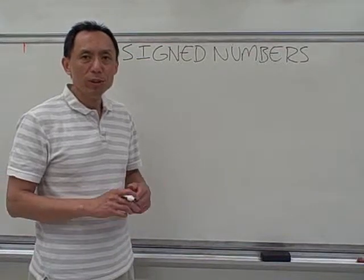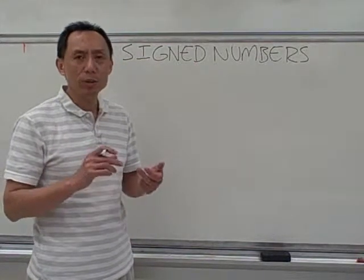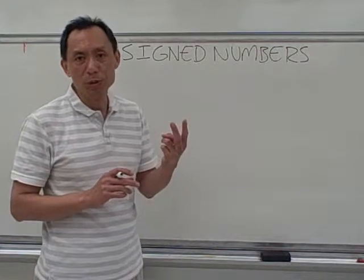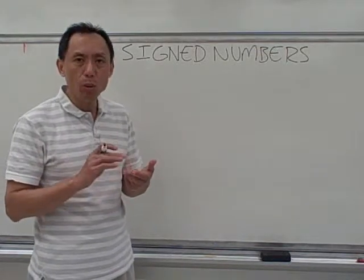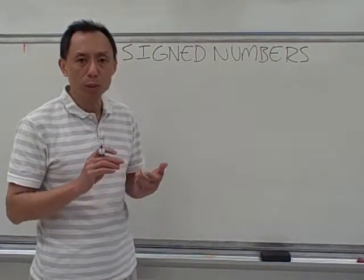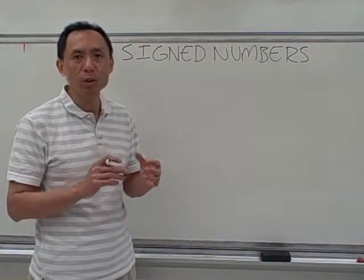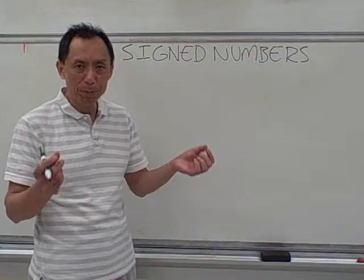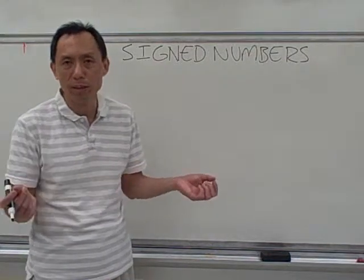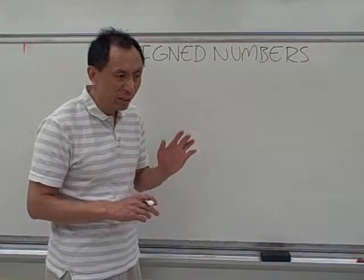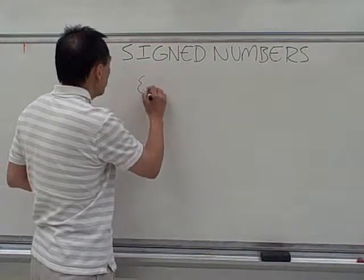We now move on to how to multiply and how to divide two numbers. Now let's remember two rules. When you multiply or divide two numbers with the same sign, the answer is positive. When we multiply or divide two numbers with opposite signs, one positive, one negative, the answer will be negative. If you keep those two rules in mind, it should go very smoothly.